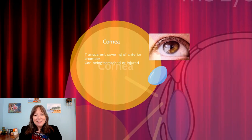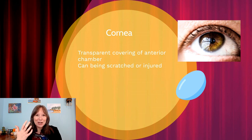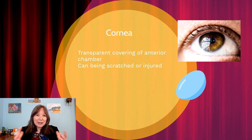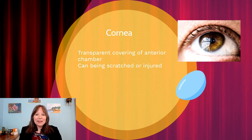The cornea, for our purposes in this course, is pretty basic — it's the transparent covering of the anterior chamber of the eye, everything before the lens. Where it can really impact our sense of vision is if we get it scratched or injured; it's going to be painful and possibly blur our sight. If you wear contact lenses, you're frequently touching your sclera and cornea, so be careful — it's kind of like a screen protector on your cell phone.